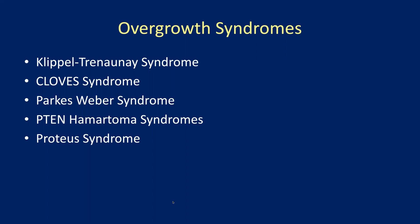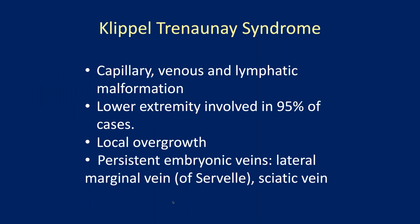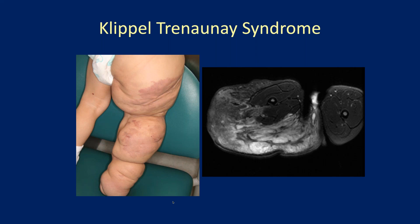KTS — Klippel-Trenaunay syndrome — is a combination of capillary, venous, and lymphatic malformation. The vast majority of patients have one extremity involved, usually the lower extremity, with associated local overgrowth predominantly due to lymphatic tissue and fat within the subcutaneous regions. An important feature is the persistence of embryonic veins, particularly the lateral marginal vein of Servelle and the sciatic vein. This child with Klippel-Trenaunay syndrome demonstrates a capillary malformation with significant overgrowth combining lymphatic disease and fatty overgrowth.